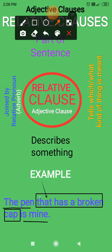'That' has connected this relative clause to the main clause of the sentence. So, 'that has a broken cap' is a relative clause because it begins with the relative pronoun 'that.' And it tells us what kind of pen, or which pen, we are talking about. We are talking about that pen which has a broken cap — it describes the pen.